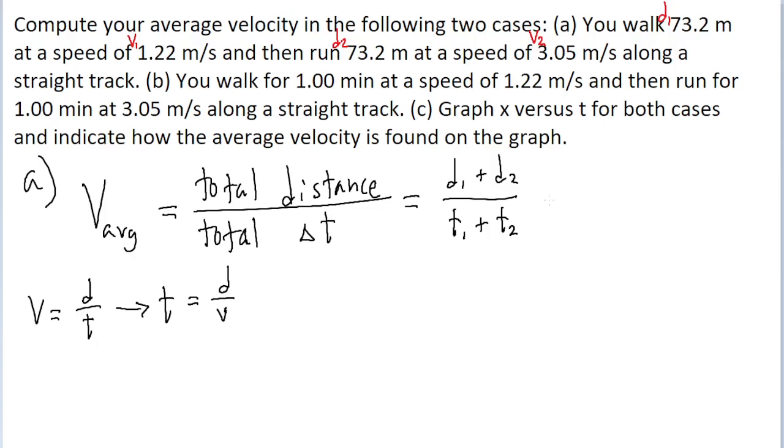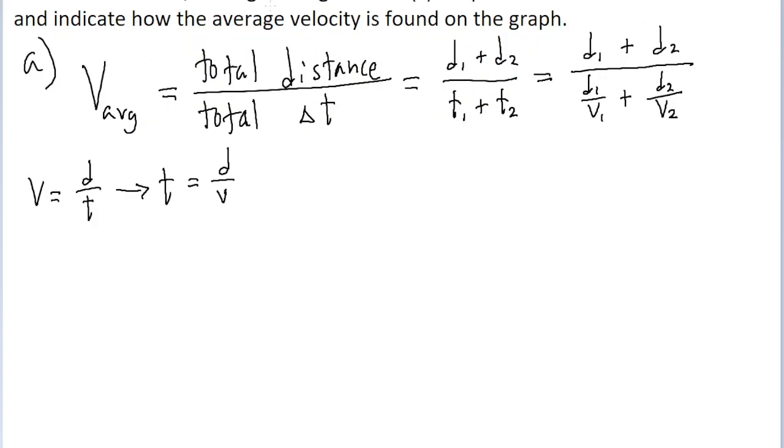So a slightly more elaborate way we can write our average velocity equation for part a is d sub 2 plus d sub 1, all divided by, and then instead of writing t sub 1, I'm going to write d sub 1 divided by v sub 1, plus, and then instead of t sub 2, I'm going to write d sub 2 divided by v sub 2. So this is a bit more of a complicated-looking formula, but it will work for what we're looking for.